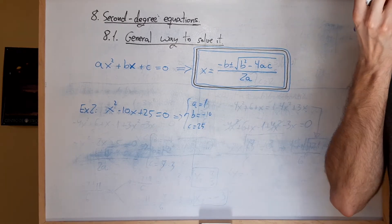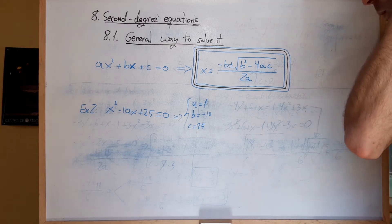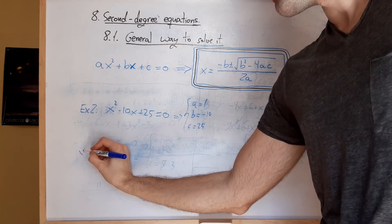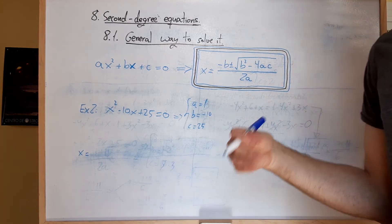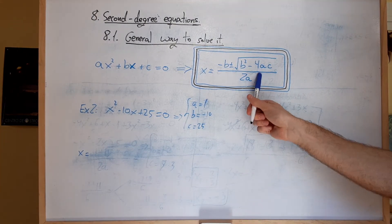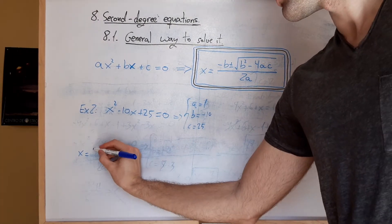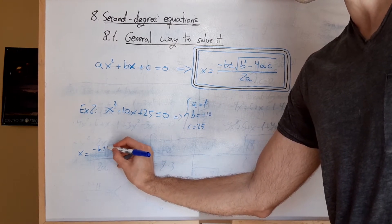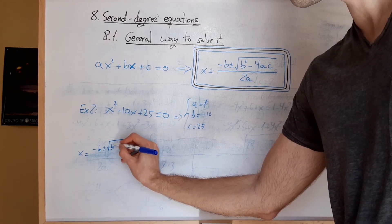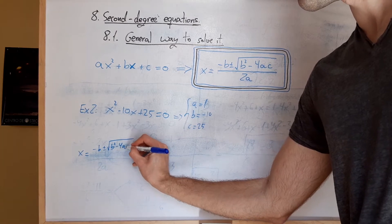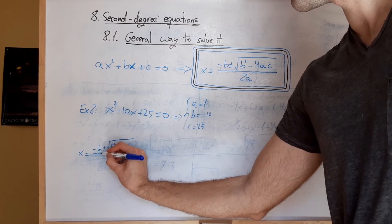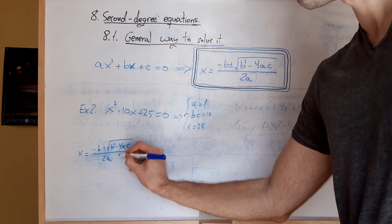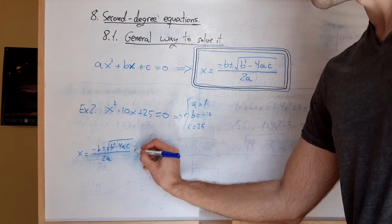So now we can solve it. And how do we solve it? Well, as we did before, we need to write the formula, the one we have in here. So we say this is: minus b plus-minus square root of b squared minus 4ac, over 2a.